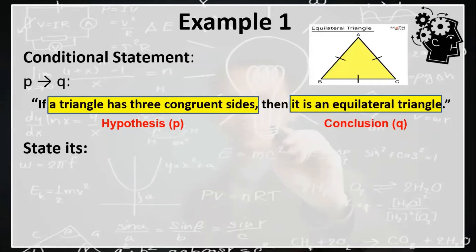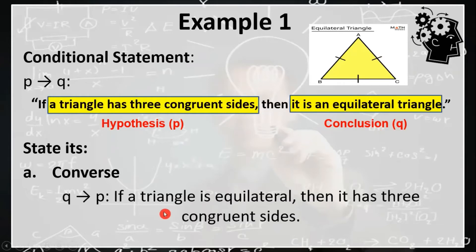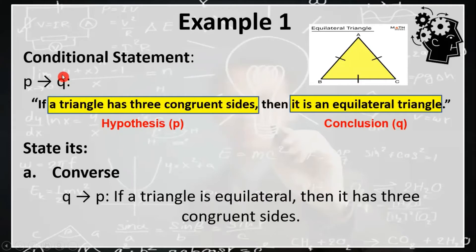Now, let's write the converse statement of the given conditional statement. When you write the converse, you have to interchange or swap the hypothesis and conclusion of the conditional statement. So in this case, the converse statement is: if a triangle is equilateral, then it has three congruent sides. Observe that the hypothesis of the converse statement is the conclusion of the conditional statement, and the conclusion of the converse statement is the hypothesis of the given conditional statement.